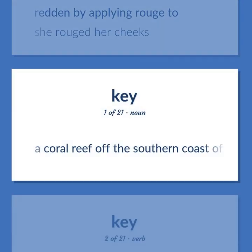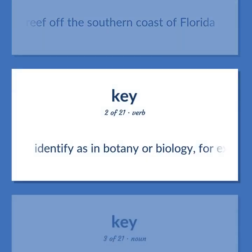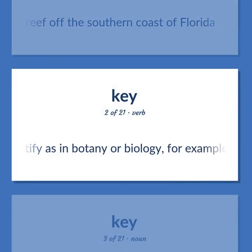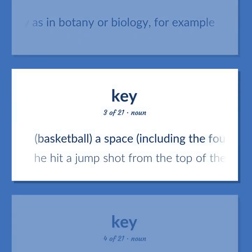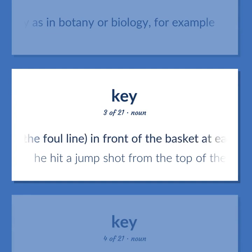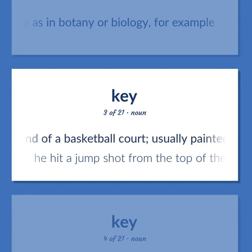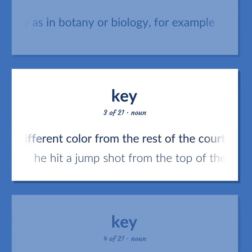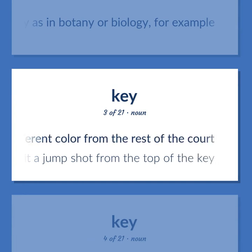A coral reef off the southern coast of Florida. Identify as in botany or biology, for example. Basketball. A space, including the foul line, in front of the basket at each end of a basketball court, usually painted a different color from the rest of the court. He hit a jump shot from the top of the key.